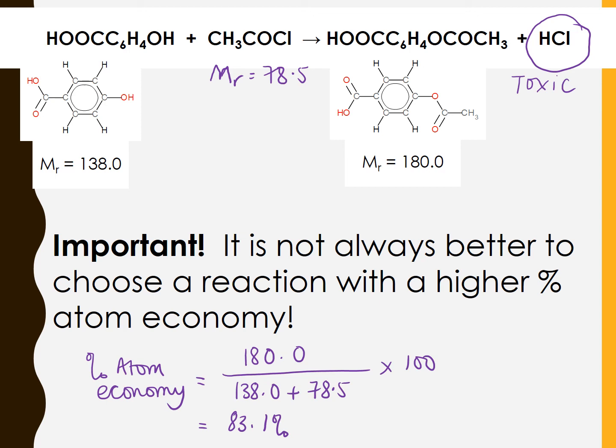So key points. Percentage yield refers to the proportion of the maximum mass of a product which is made and relates to how effective that experimental method is. For instance, any loss of product on transfer or side reactions that are unwanted or incomplete reactions will all compromise the percentage yield.